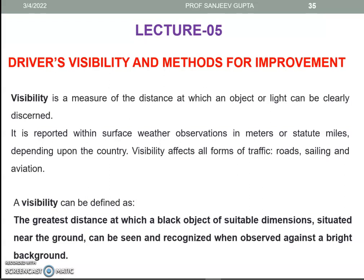Visibility is a measure of the distance at which an object or light can be clearly discerned. It is reported with surface observations in meters or statute miles depending upon the country, and usually affects all forms of traffic: roads, sailing, and aviation. Visibility can be defined as the greatest distance at which a black object of suitable dimensions situated near the ground can be seen and recognized when observed against a bright background.